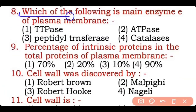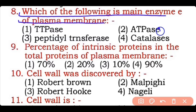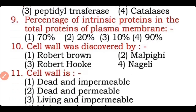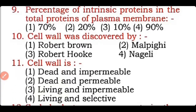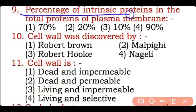Question 8: Which of the following is the main enzyme of the plasma membrane — TTPase, ATPase, peptidyl transferase, or catalase? Correct answer is option two — ATPase is the main enzyme present in the plasma membrane.